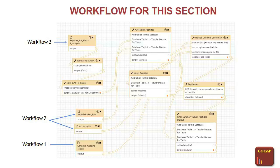If you want to use the ability to view your spectra, you should have an MZ identML output. Many software tools generate this — Scaffold does that, Protein Pilot does that, and Proteome Discoverer as well. MZ identML is quite a standard output nowadays that most software generates. If your software does not generate it, that will prevent you from doing spectral visualization, but you can still do the rest of the workflow. If you run it in Galaxy, Search GUI and Peptide Shaker generate that output.